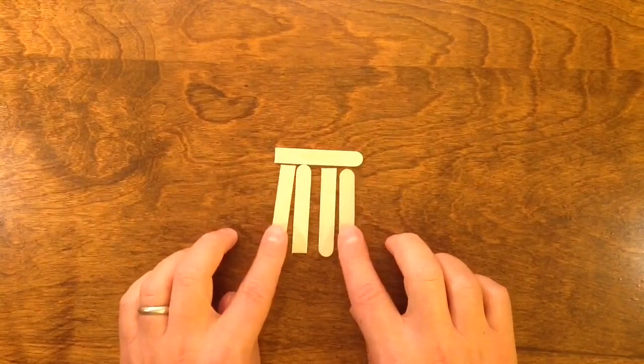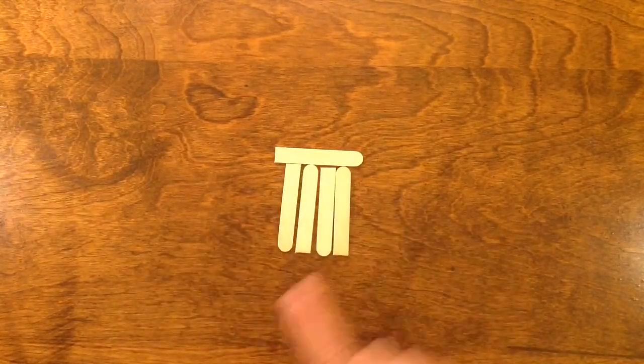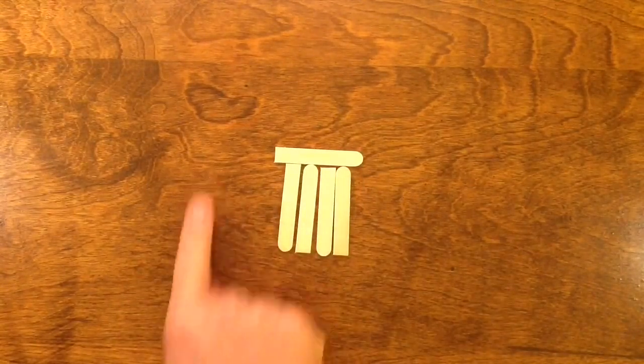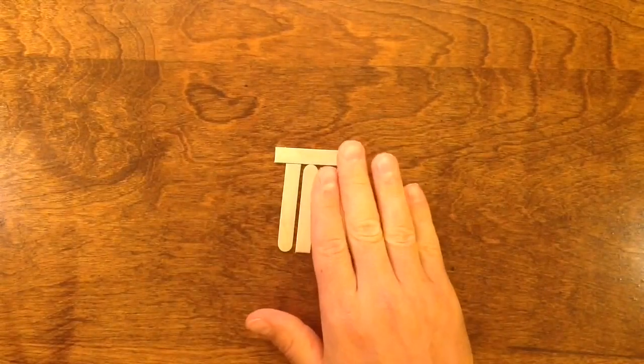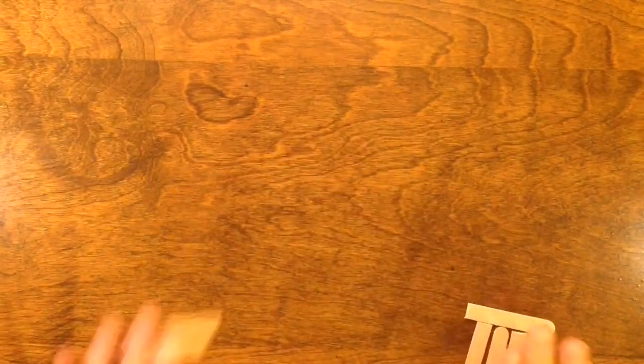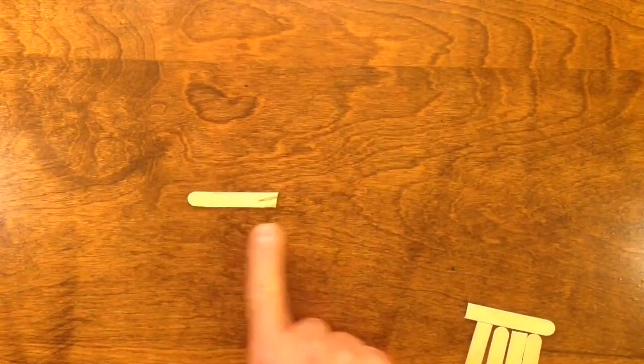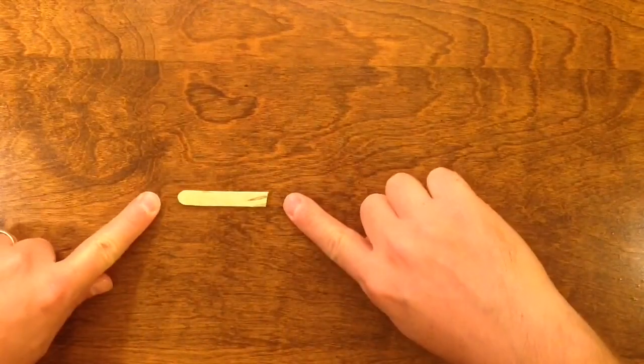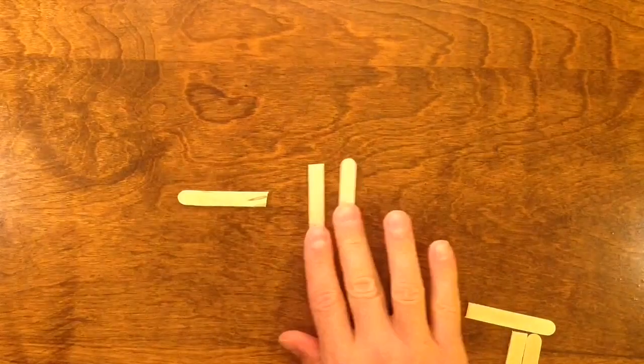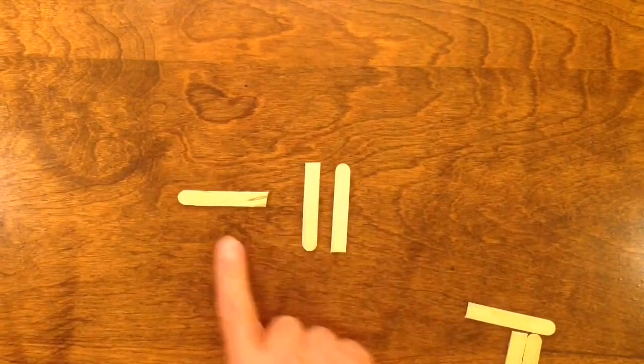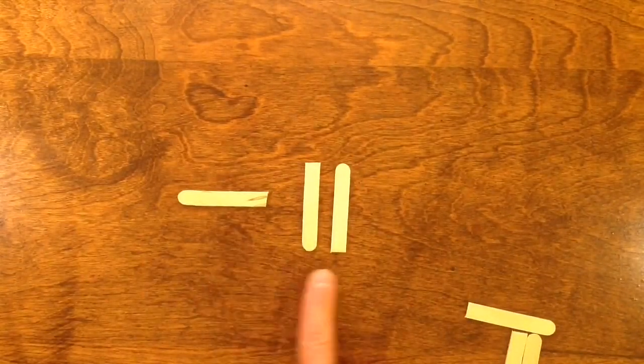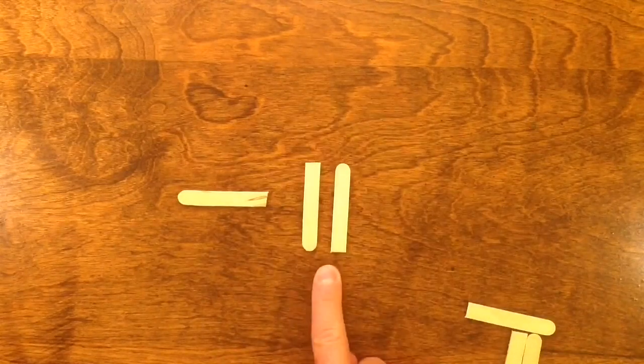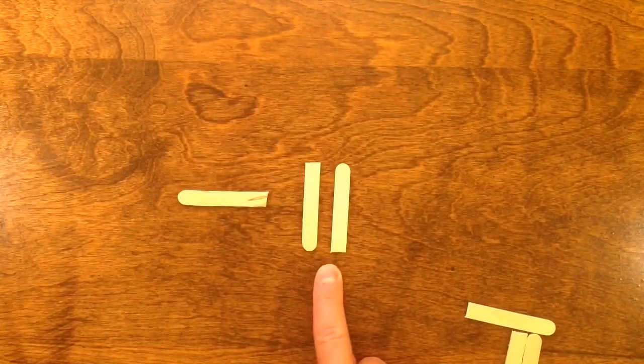It was a base 10 system in that once we get up to 9, we're going to use a second spot to represent the numbers. Now what they did was they represented a 10 with placing kind of one rod horizontally. So for example, 12 would be represented with a single rod in a horizontal position and then two rods representing the two more in a vertical position.